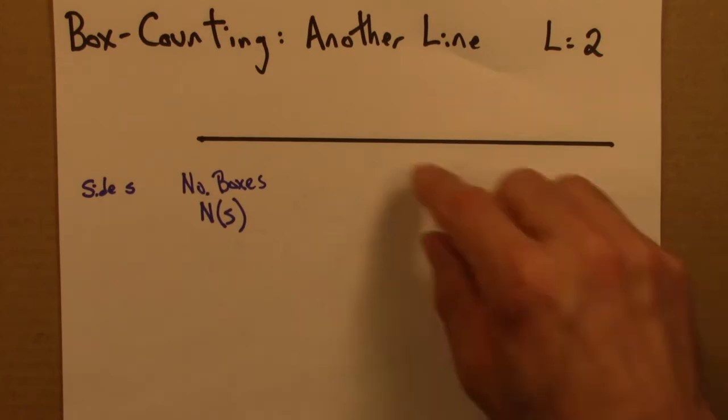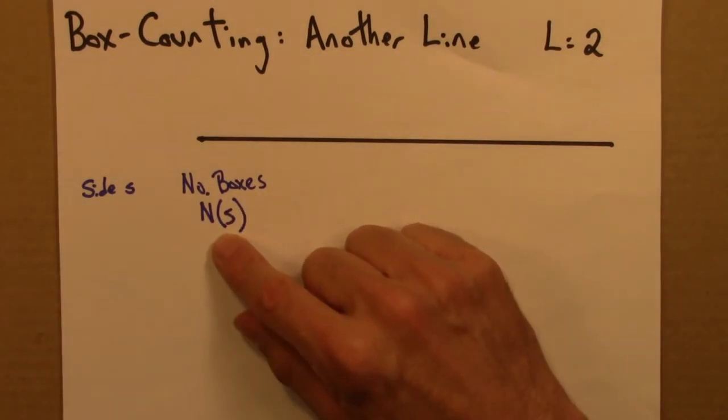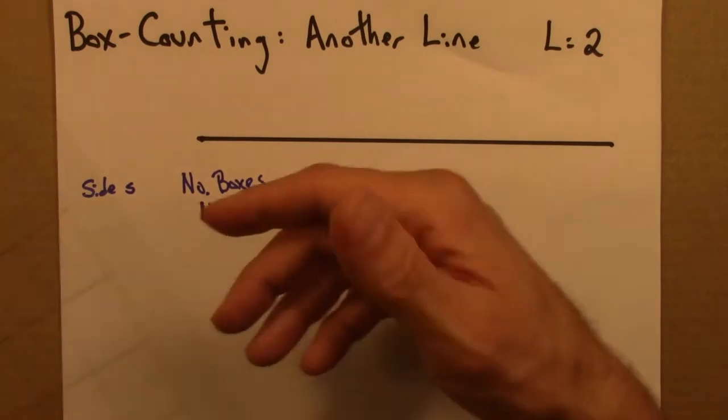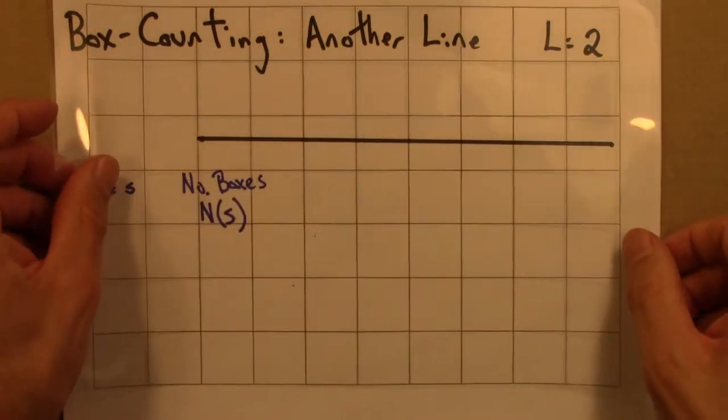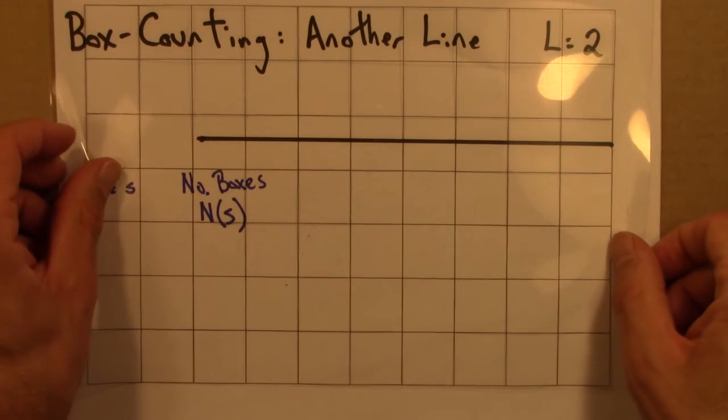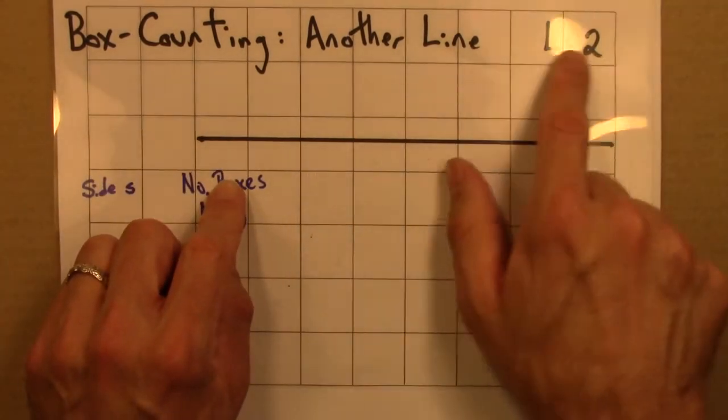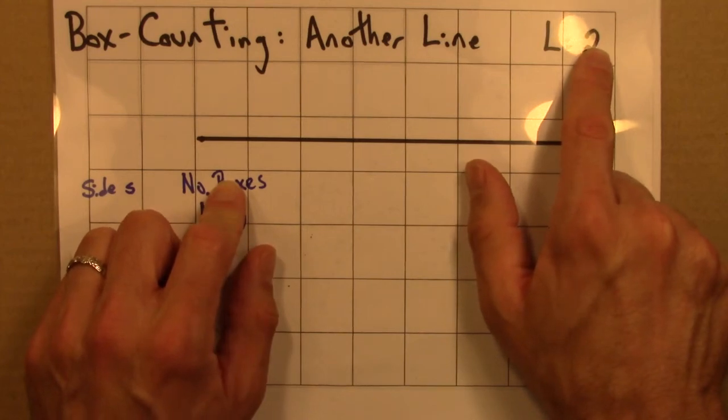As before, we want to know how many boxes does it take to cover it for a given box with side s. So here, these are my boxes with side a quarter, and the length of the line now is 2. So let's see what we get.